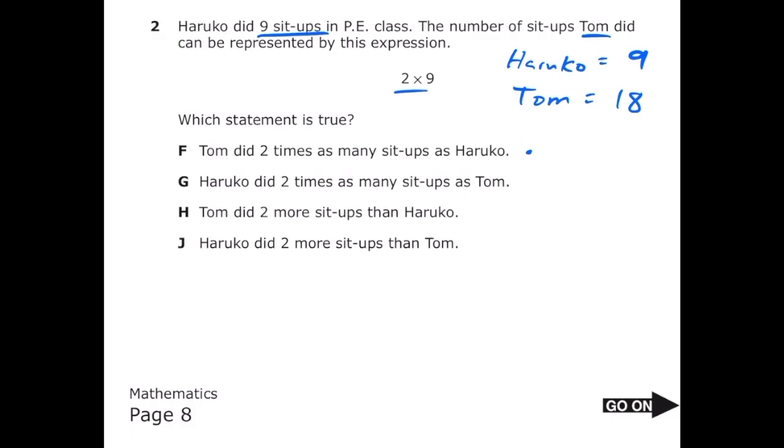Letter G says Haruko did 2 times as many sit-ups as Tom. That's not true. Letter H: Tom did 2 more sit-ups than Haruko. That's not true. Letter J: Haruko did 2 more sit-ups than Tom. That's also not true. So the correct answer is letter F.